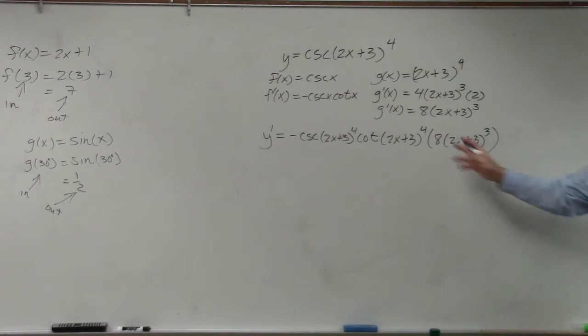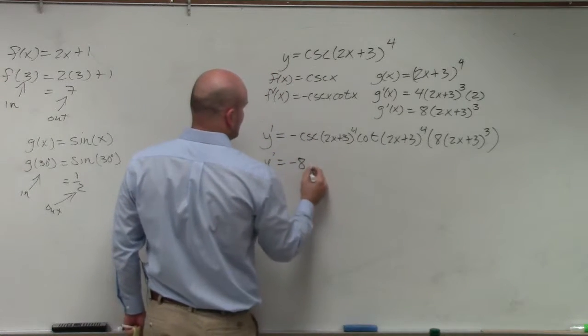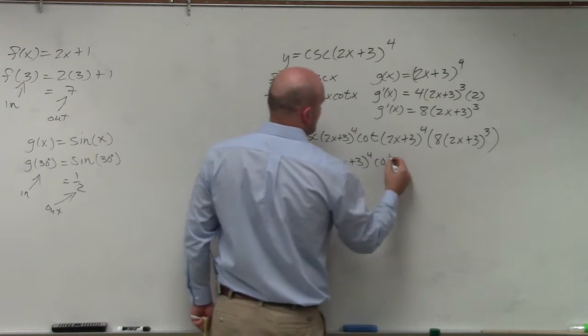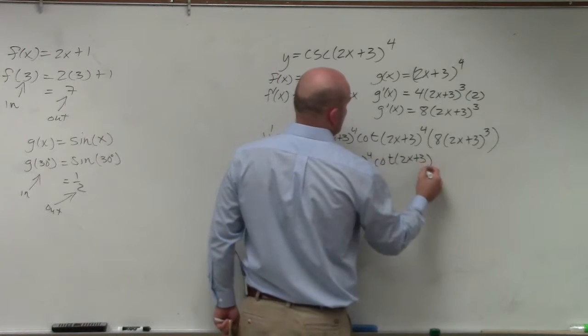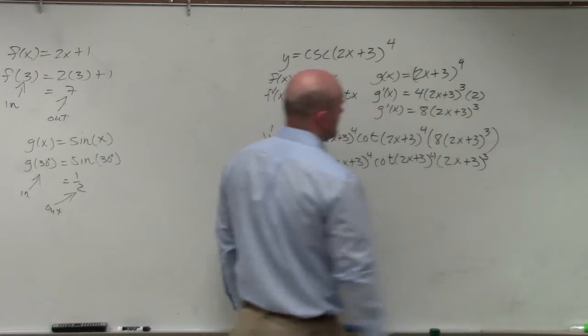Now we can just go ahead and multiply our 8 in front. I'll just rewrite it. Negative 8 times cosecant of 2x plus 3. There you go.